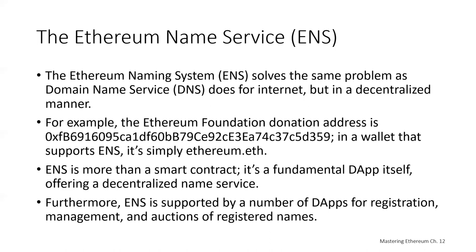ENS is more than a smart contract — it's a decentralized application itself, offering a decentralized naming service. ENS is supported by a number of other decentralized apps for registration, management, and auctions of registered names. It's a good demonstration of how dApps can work together: a dApp built to serve other dApps, supported by an ecosystem of dApps embedded in other dApps.